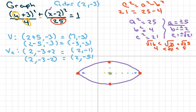Our foci, we always add to the bigger number here. So we added it to the X value. So I'm going to copy down my center again. So your foci is going to be 2 plus square root of 21, negative 3, and 2 minus square root of 21, negative 3.